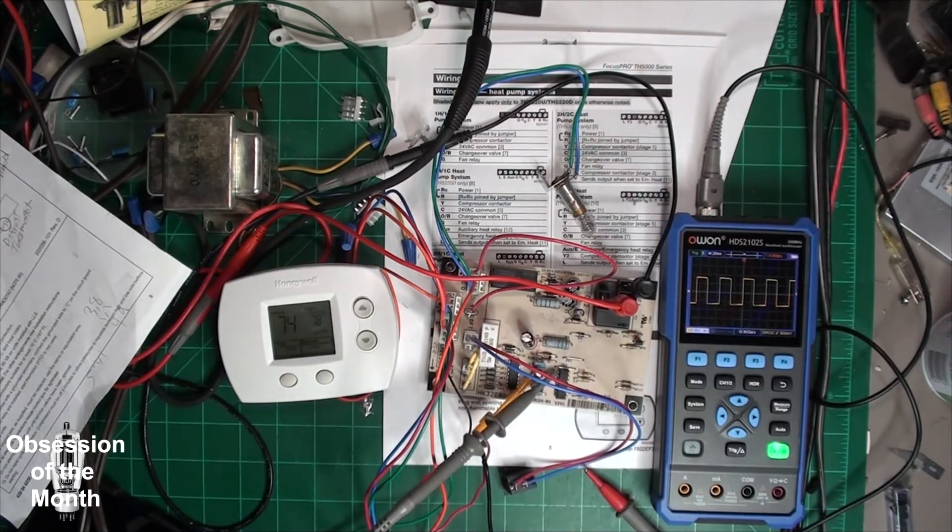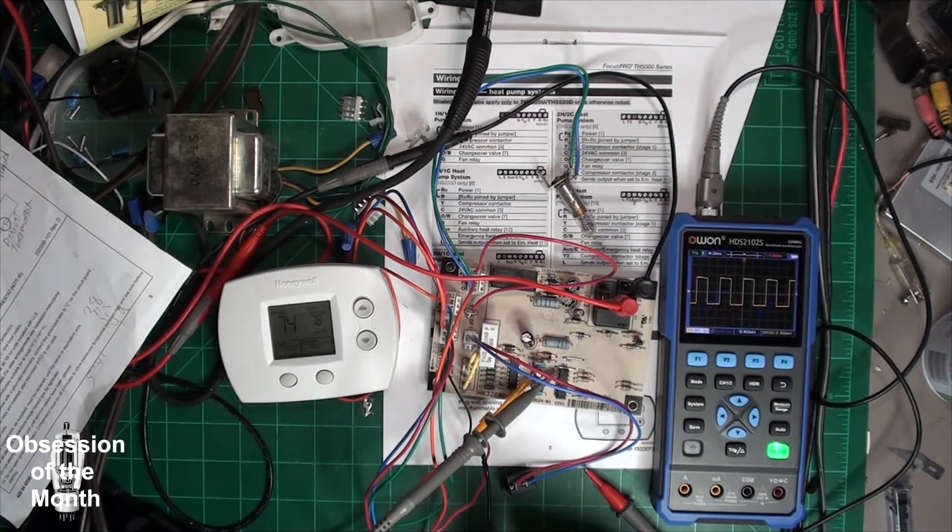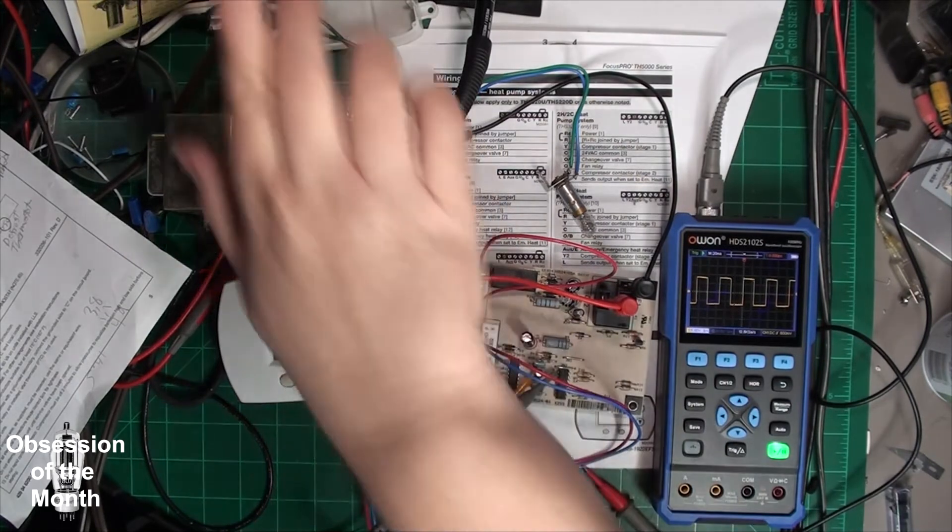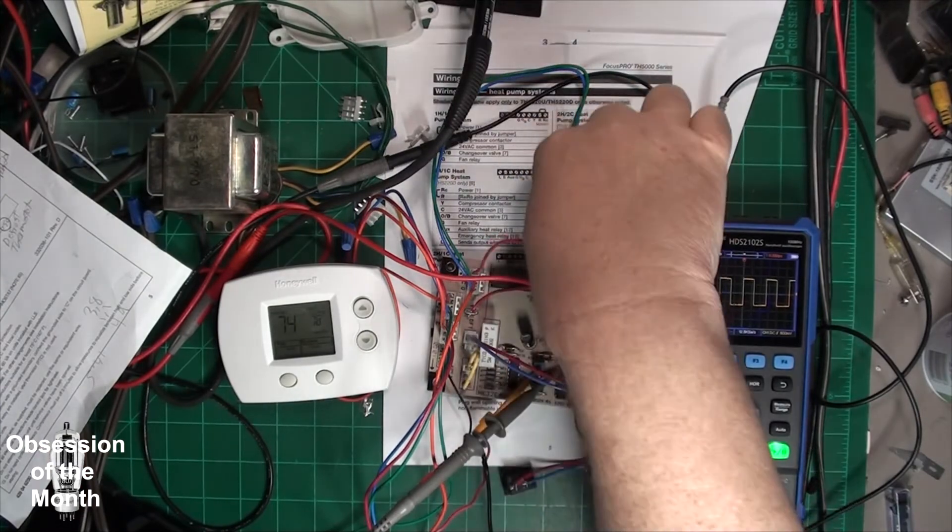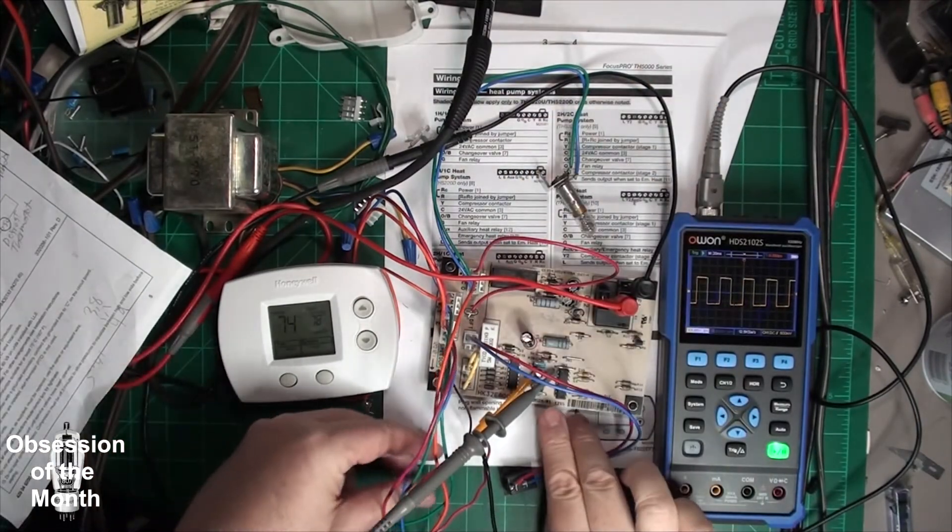This timer chip is set to 30 minutes, and when it reaches 30 minutes, I can speed this up, but when it hits 30 minutes, it's going to turn off this and it's going to turn on that. So we'll simulate that here.